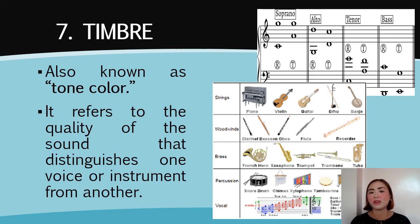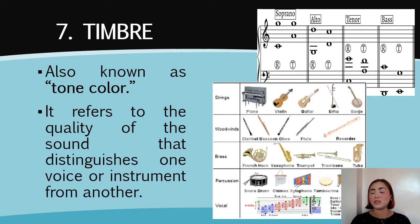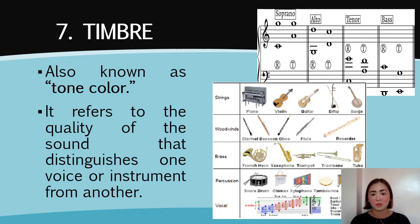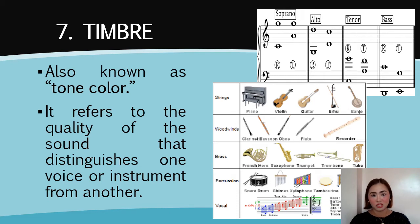There are two variations of timbre. Let us start with the timbre for musical instruments. There are four different families of musical instruments. Therefore, there are also four variations of timbre for musical instruments. We have the strings, woodwind, brass instruments, and percussion instruments.